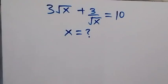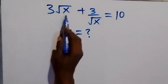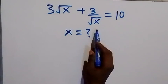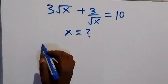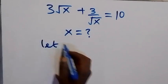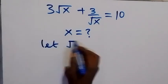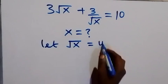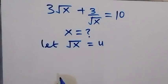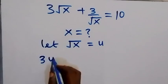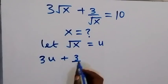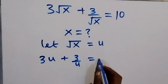Hello, you are welcome. Here we solve a nice algebra equation involving roots. We have 3√x + 3/√x = 10. To find the value of x, let's represent √x with a letter. Let √x equal u. Then we can write the equation as 3u + 3/u = 10.